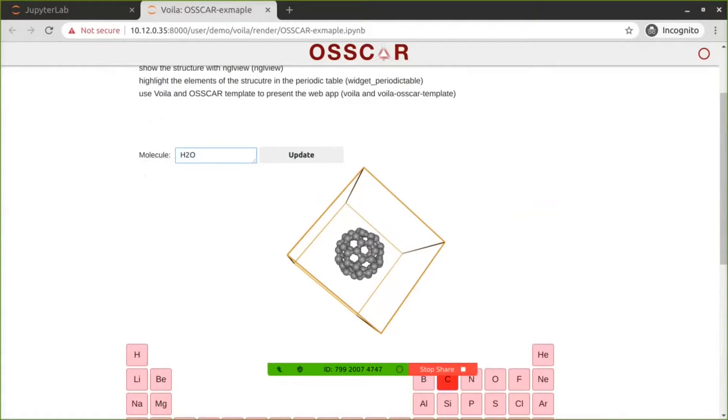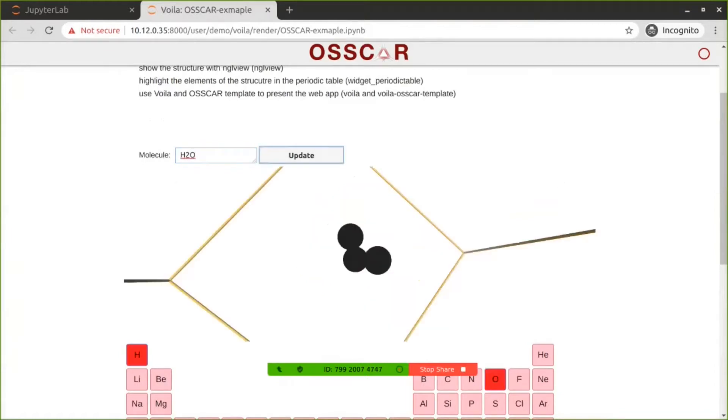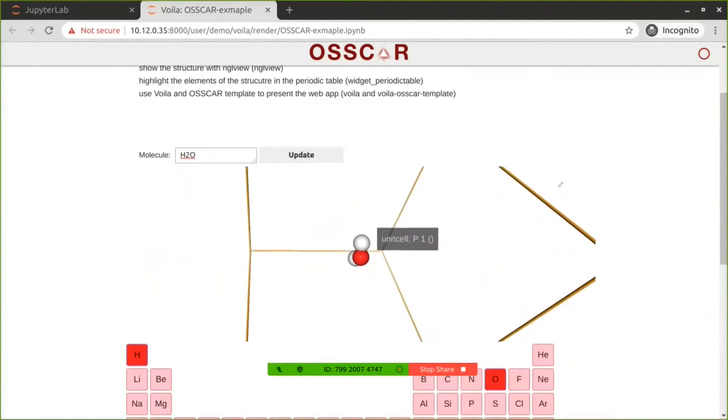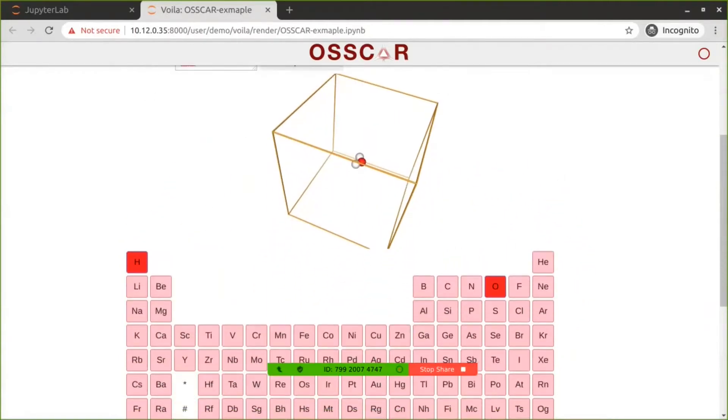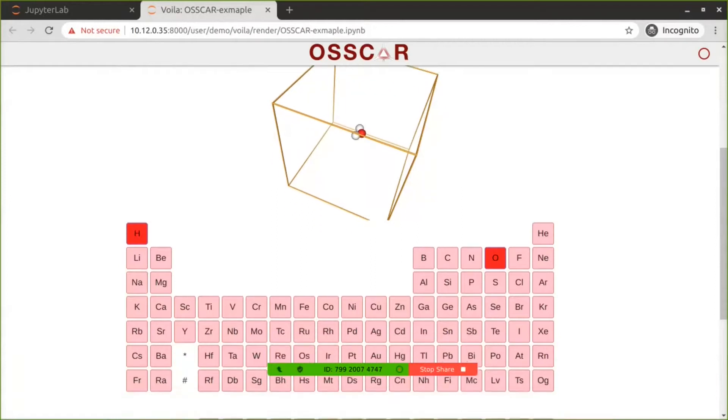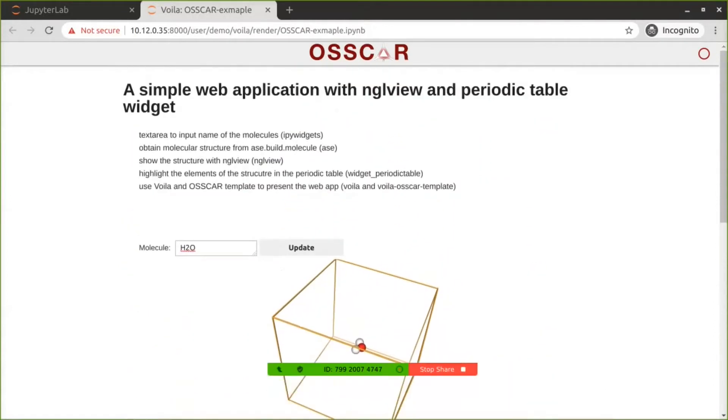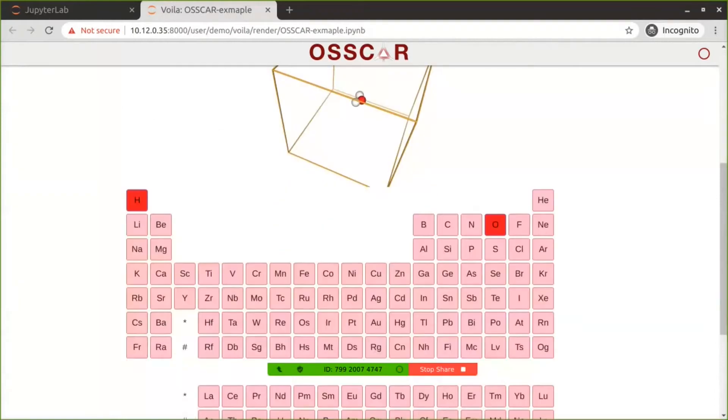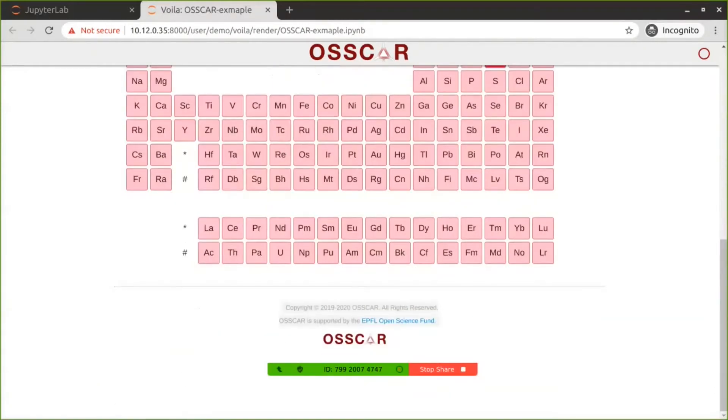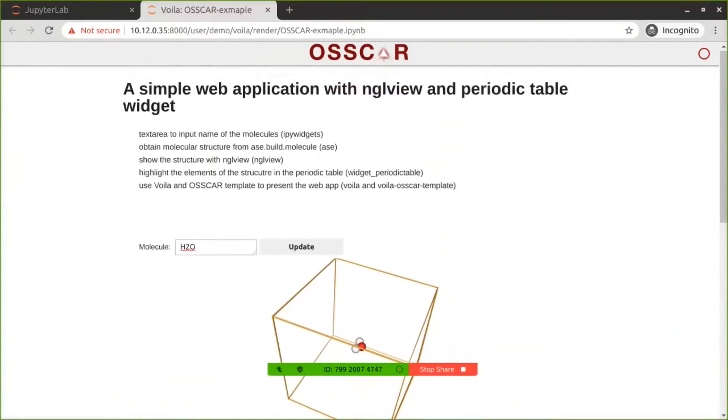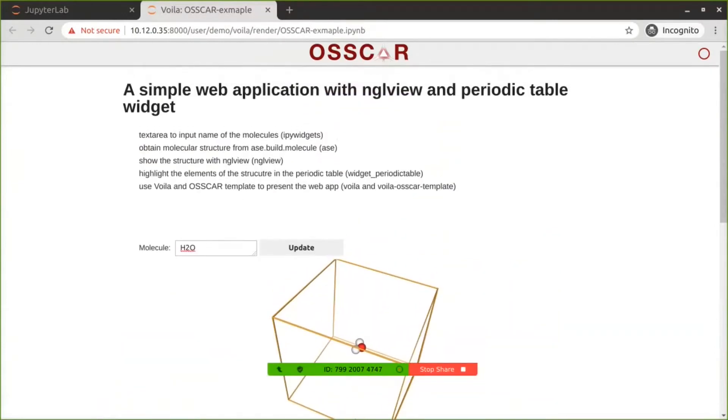When we change the molecule to water and click update, then we have the water molecule. In the periodic table, the selected elements have changed to hydrogen and oxygen with red color. This webpage is decorated by the Voila OSCAR template. We have the OSCAR logo on the top bar. We also have a footer for OSCAR. On the top right corner, we have a button to show how busy the Jupyter kernel is.